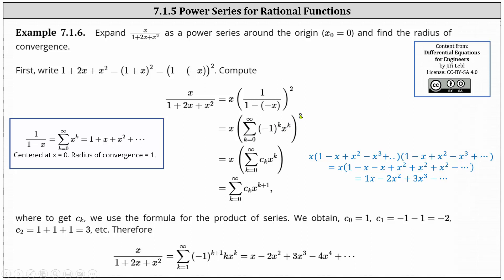This power series is squared. When we square this power series, the result is the sum from k equals 0 to infinity of c sub k times x to the power of k. We'll work on determining c sub k, which represents the coefficients, in just a few moments. From here, if we multiply by x, we end up with the sum from k equals 0 to infinity of c sub k times x to the power of k plus 1. Now we need to determine c sub k. We can use the formula for the product of series, or we can expand and determine the product, as shown here in blue.